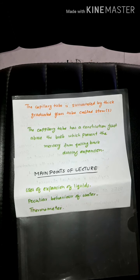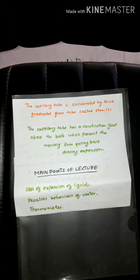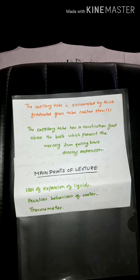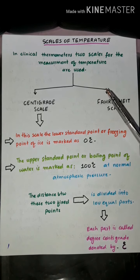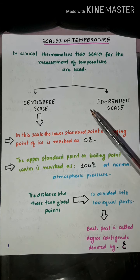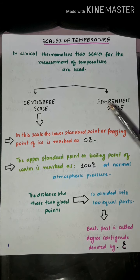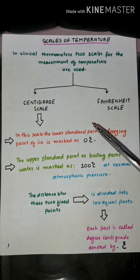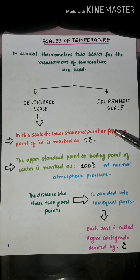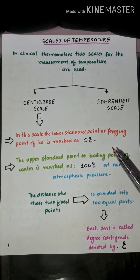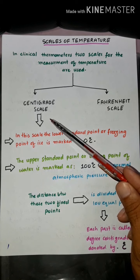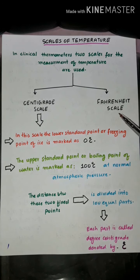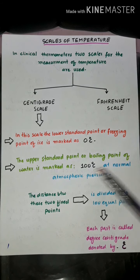In today's lecture we will discuss the types of scales used in our daily life — the scale of temperature. In a clinical thermometer, two types of scales are used to measure temperature: the centigrade scale and the Fahrenheit scale.